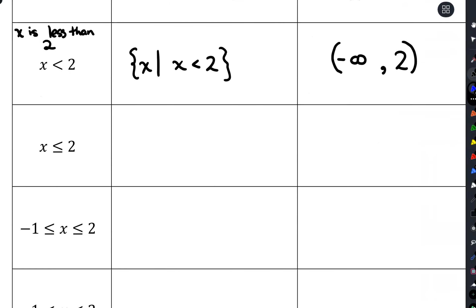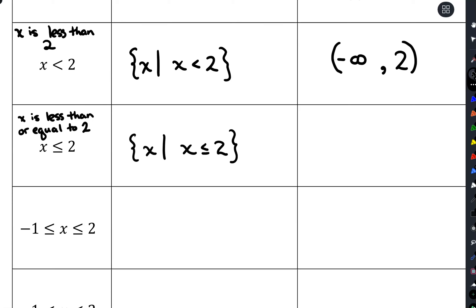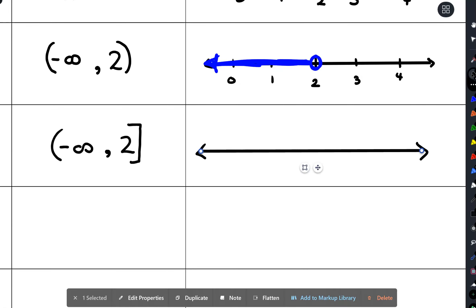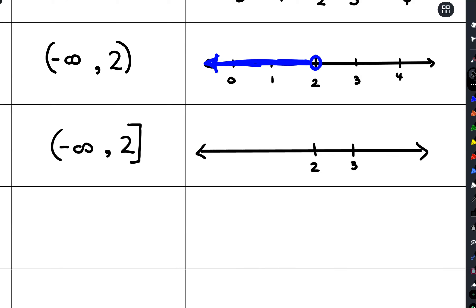Here we have x is less than or equal to two. In set builder notation we just copy that down. For interval notation we go from negative infinity to two — parentheses with negative infinity every time — and a square bracket at two because we have the equals. On the graph we change to a closed circle at two and shade everything below.